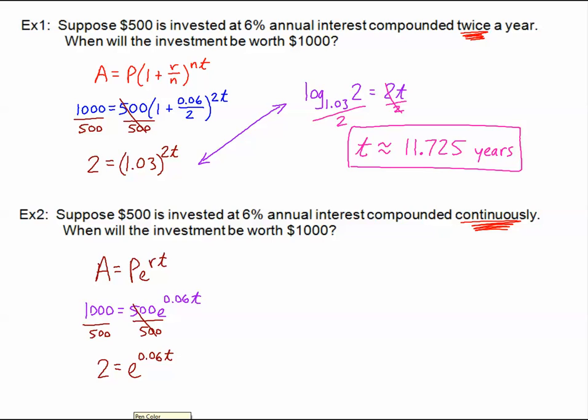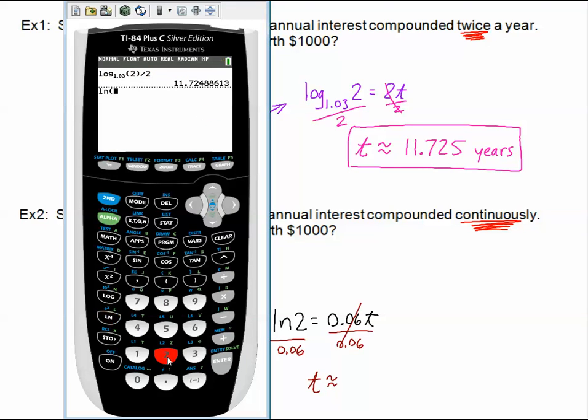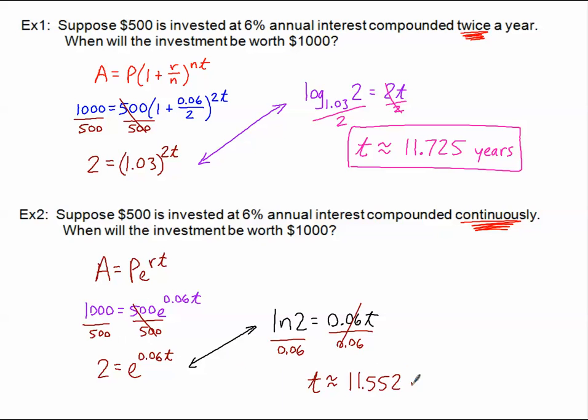We have to isolate the base before we do anything else. The 500 is going to divide first and I'm going to have 2 is equal to E to the 0.06T. Since I'm dealing with base E, I'm going to be using natural logs. I'm going to say the natural log of 2 is equal to 0.06T, and now all I have to do is divide by 0.06. T is approximately 11.552 years.